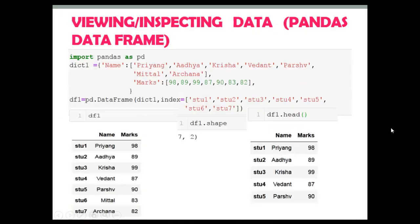Hello coders. In this video I am going to explain you some important functions and attributes of pandas DataFrame. So let's get started. First, the shape attribute. The shape attribute of a pandas DataFrame stores the number of rows and number of columns as a tuple.